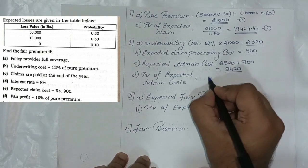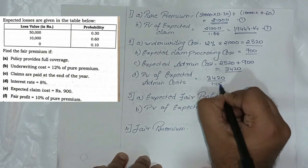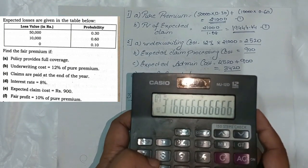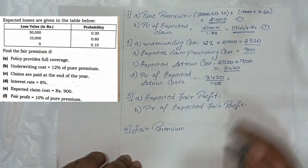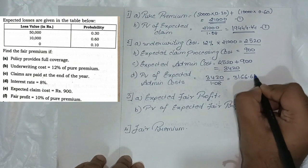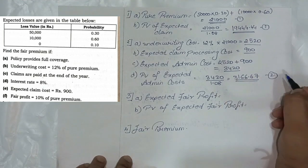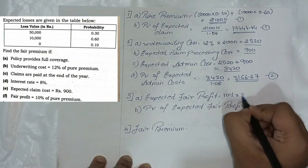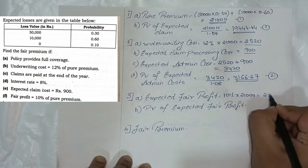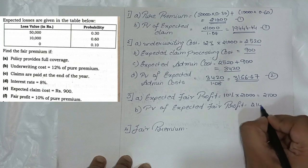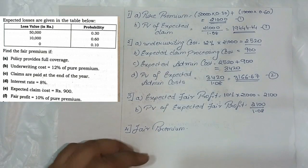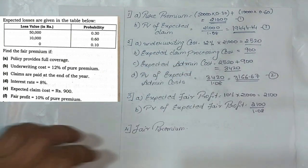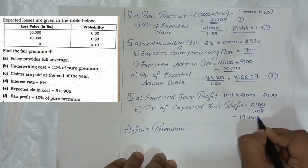PV of expected admin cost = 3,420/1.08 = 3,166.67. Next, fair profit = 10% of pure premium = 10%×21,000 = 2,100. PV of fair profit = 2,100/1.08 = 1,944.44.